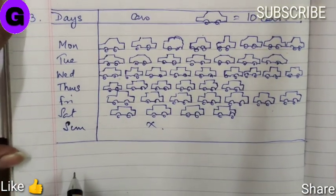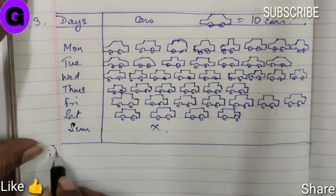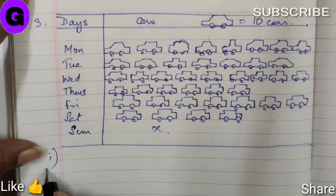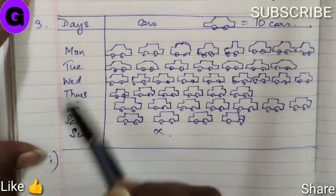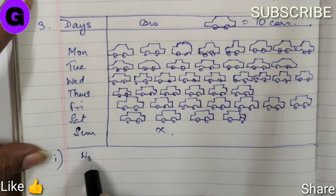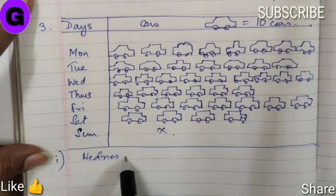The first question asks: On which day is the maximum number of cars sold? No doubt it was Wednesday with 90 cars. So the answer is Wednesday.